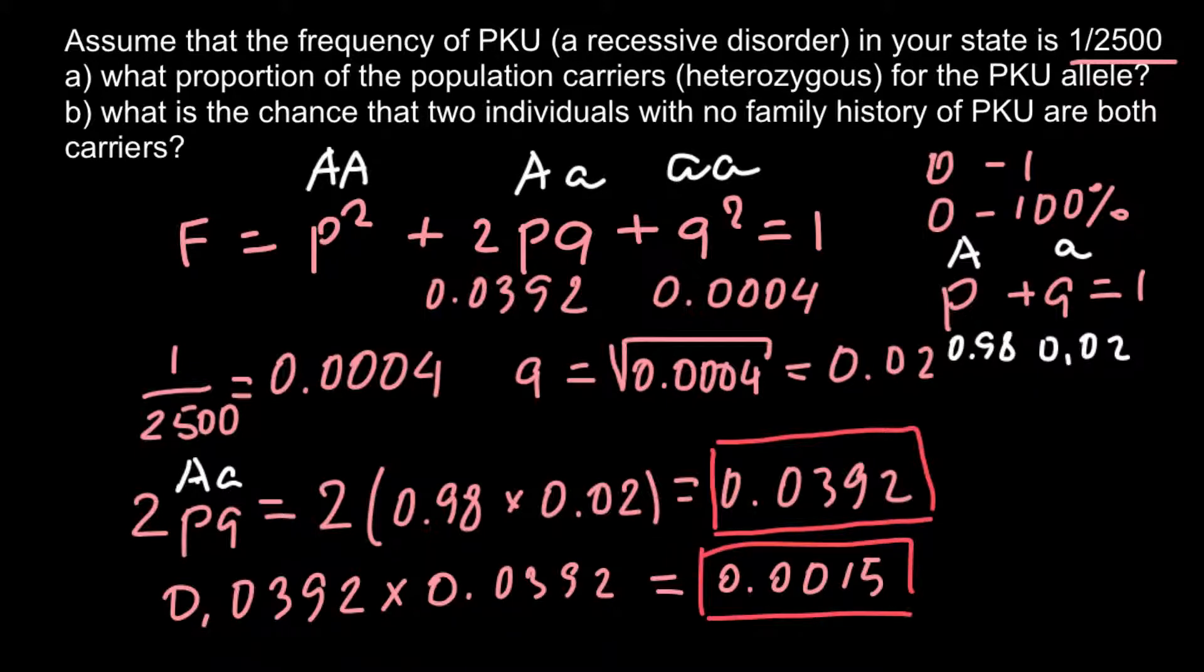But now I also want to show you how, using this information, we can come back to this probability of a person to be affected with this genetic disorder. So if we have a couple, this is going to be, for example, female, and this is going to be a male. So this is their probability to meet together to be both carriers, to be heterozygous capital A small a, and probability to meet together.